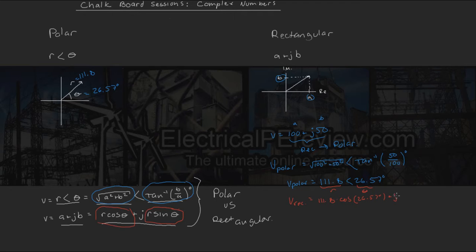Plus j, now we're solving for our imaginary component, or b, is going to equal r, or magnitude, 111.8, times sine theta, which again is 26.57 degrees.